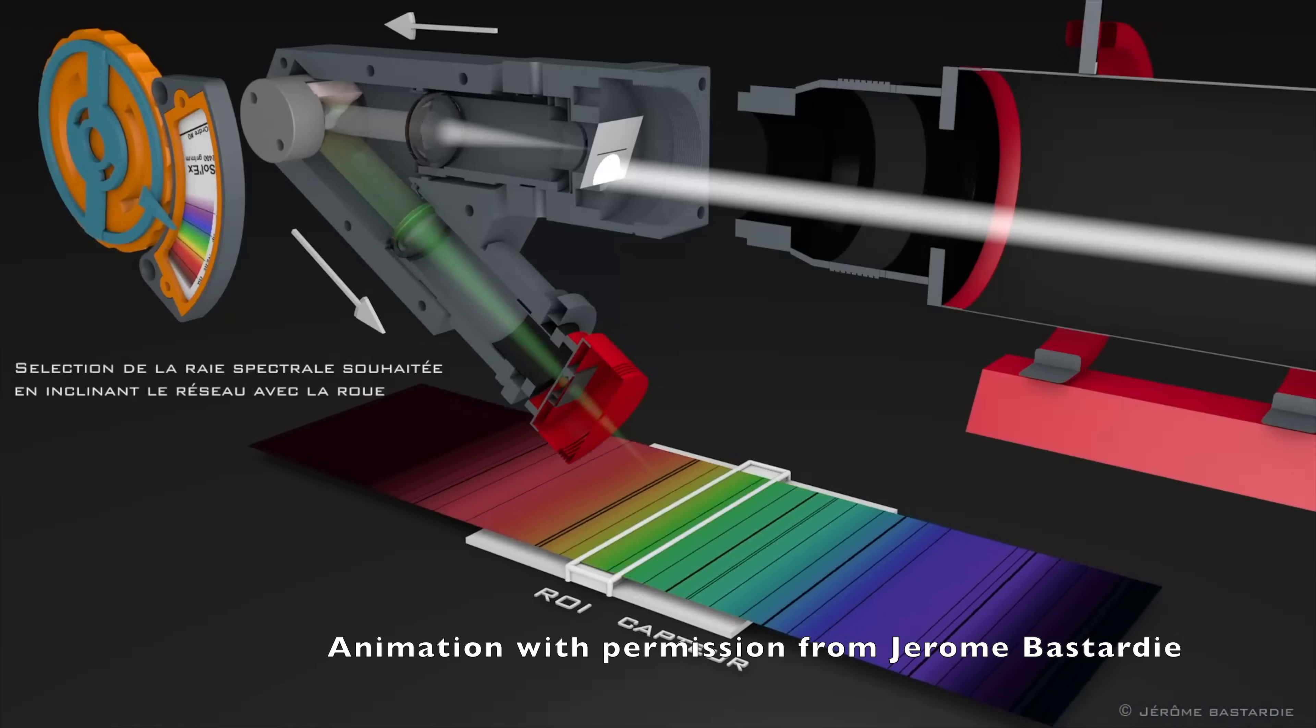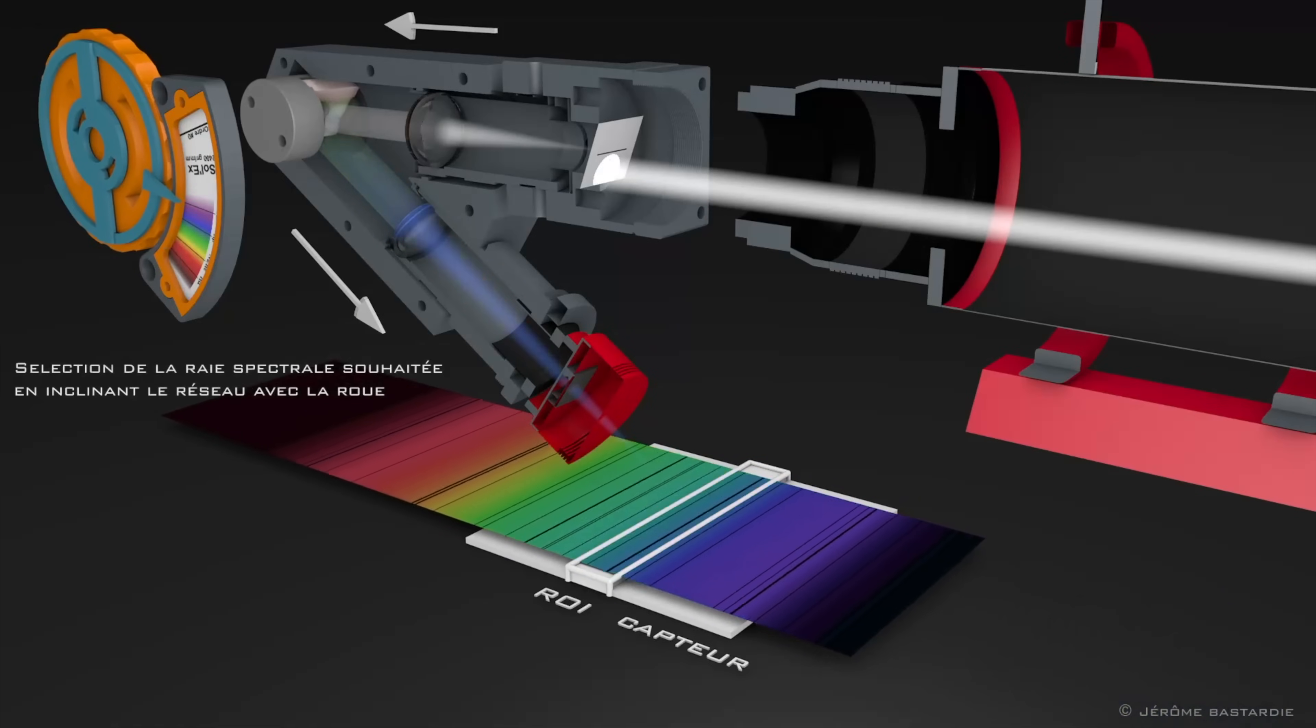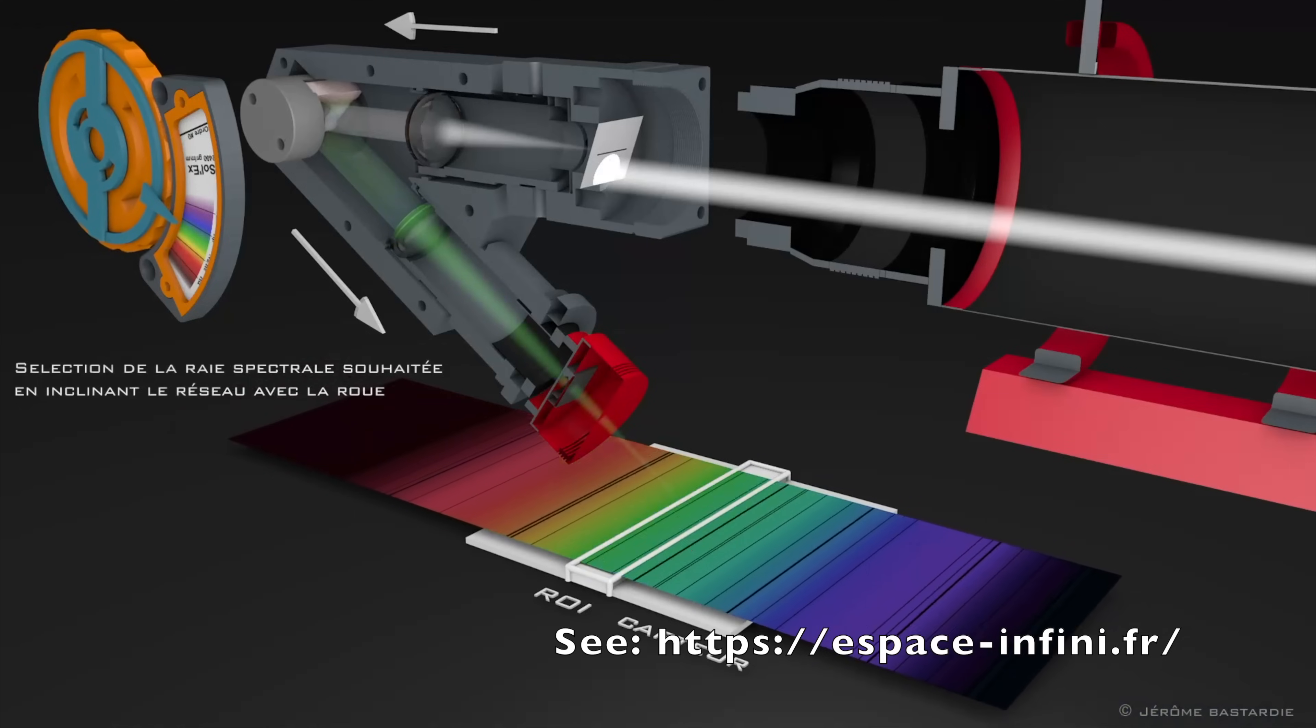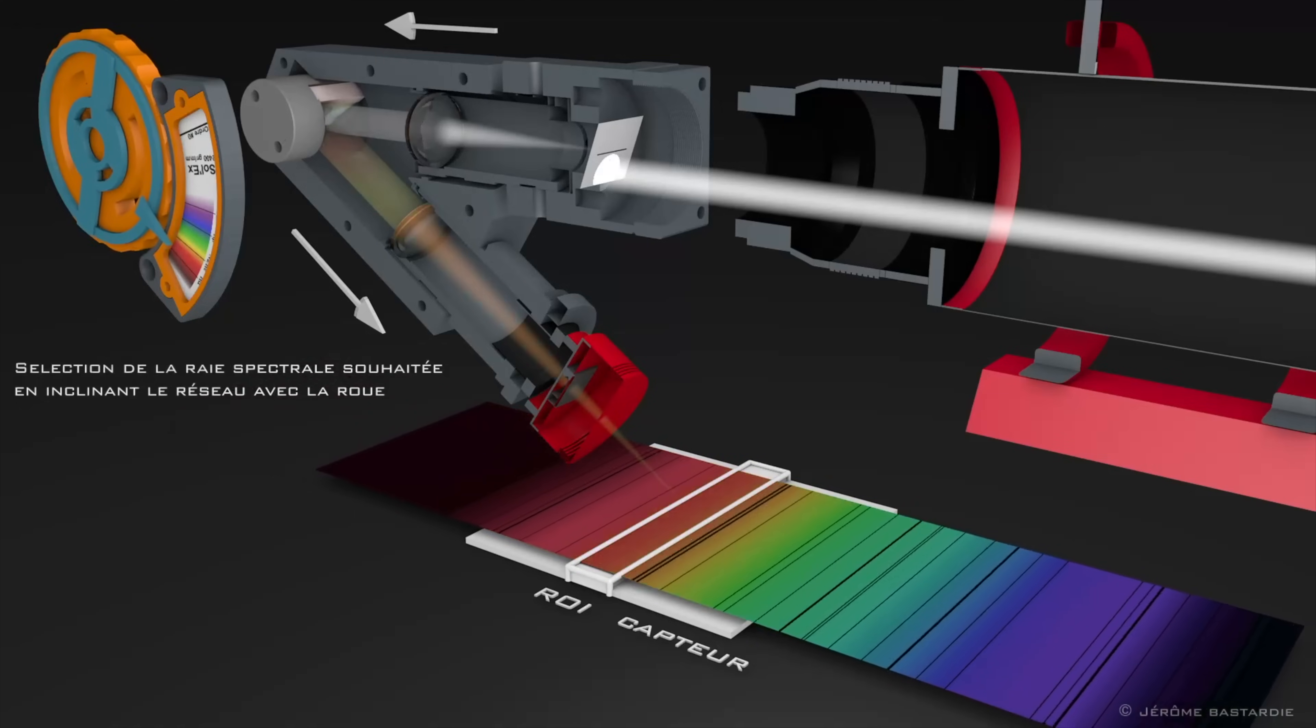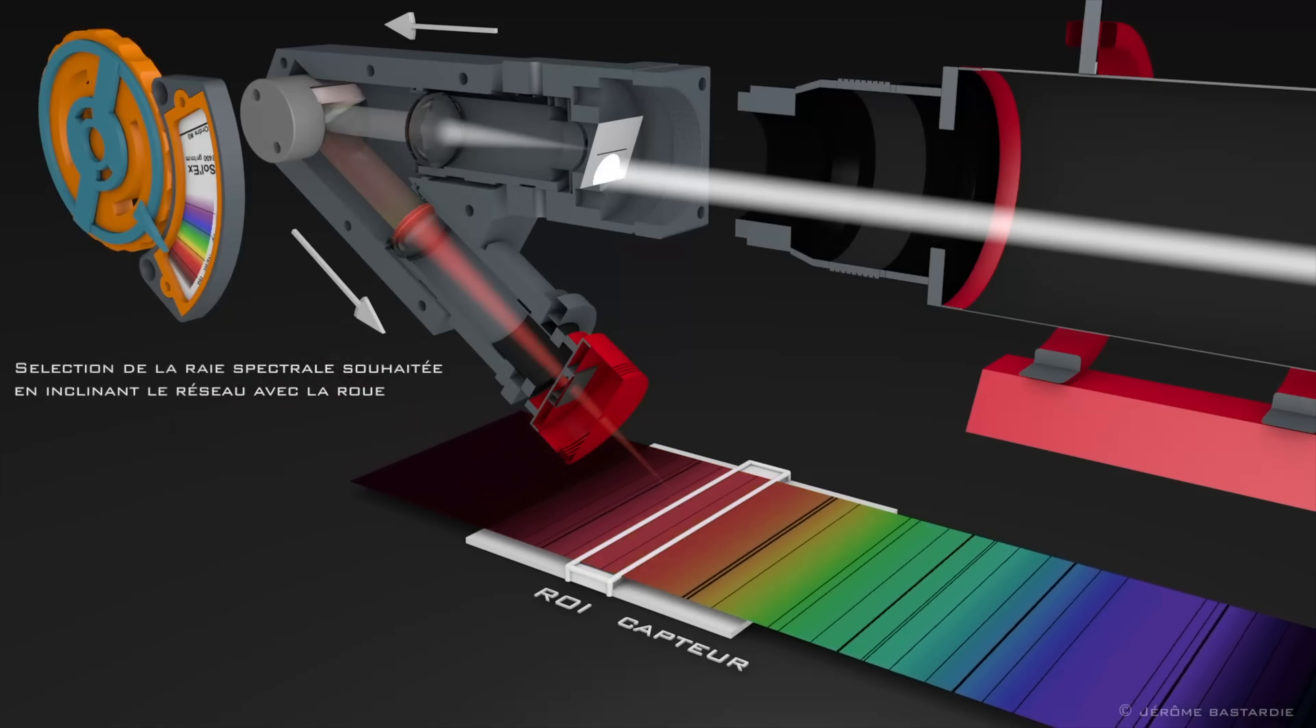A spectroheliograph is an instrument used in solar astronomy to capture images of the Sun that are invisible in white light. It isolates a narrow wavelength range of light, usually corresponding to a specific spectral line emitted by elements like hydrogen alpha or calcium K. This lets you study different layers and features on the Sun, such as sunspots, prominences, magnetic fields, and the chromosphere.